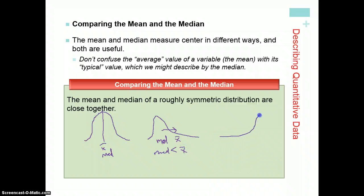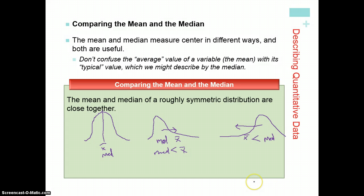We have a skewed left distribution. Our median will be at the center, but our mean will be drawn to the left, down to those lower values. So x bar is less than the median for a skewed left distribution.